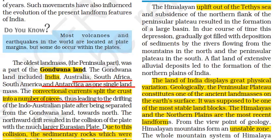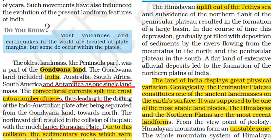Due to this collision, the sedimentary rocks that had accumulated in the Tethys Sea all folded and formed the mountain system of western Asia, also known as the Himalayas. This upliftment caused a large area on the northern flank of Peninsular India to subside, resulting in the formation of a large basin. Himalayan rivers gradually filled this basin with deposits, and this is how the great North Indian Plains were formed.